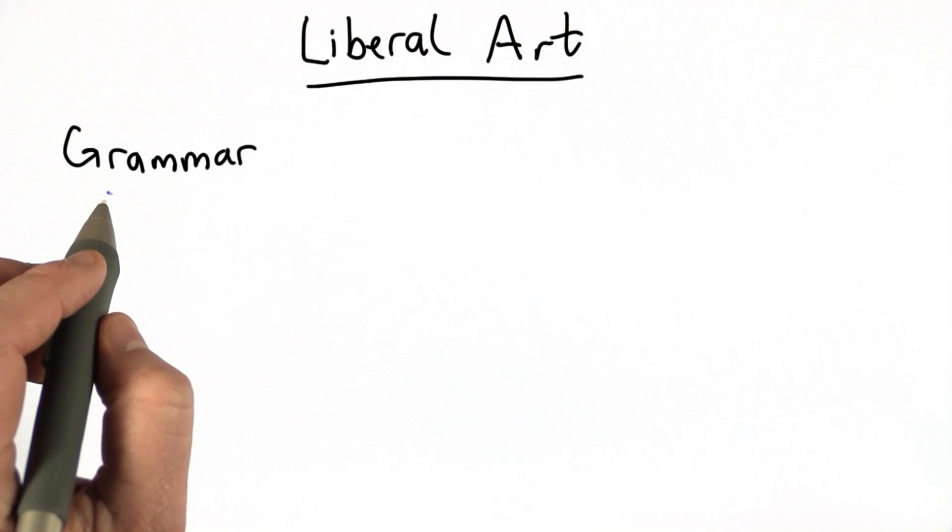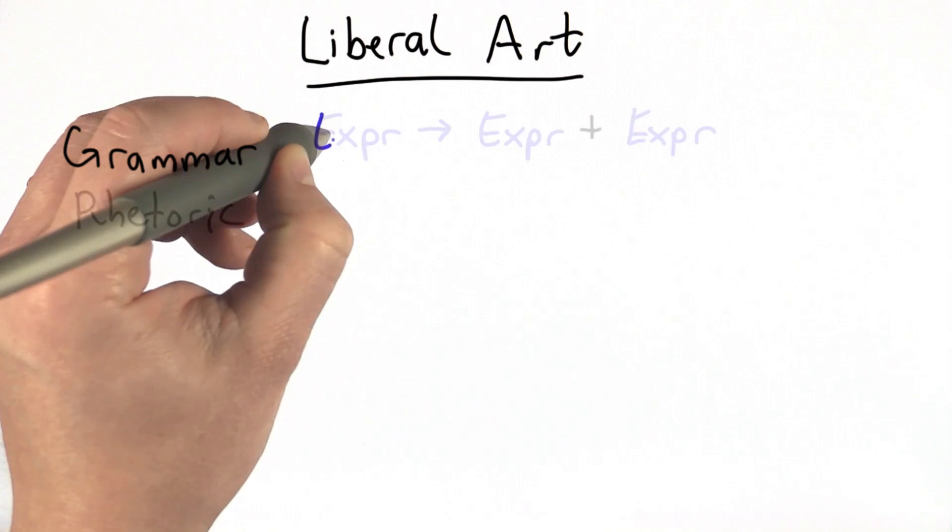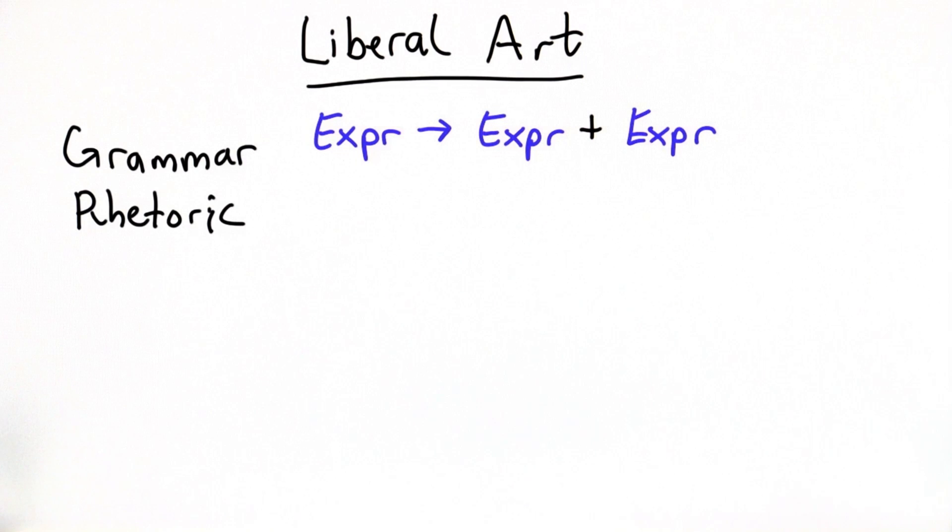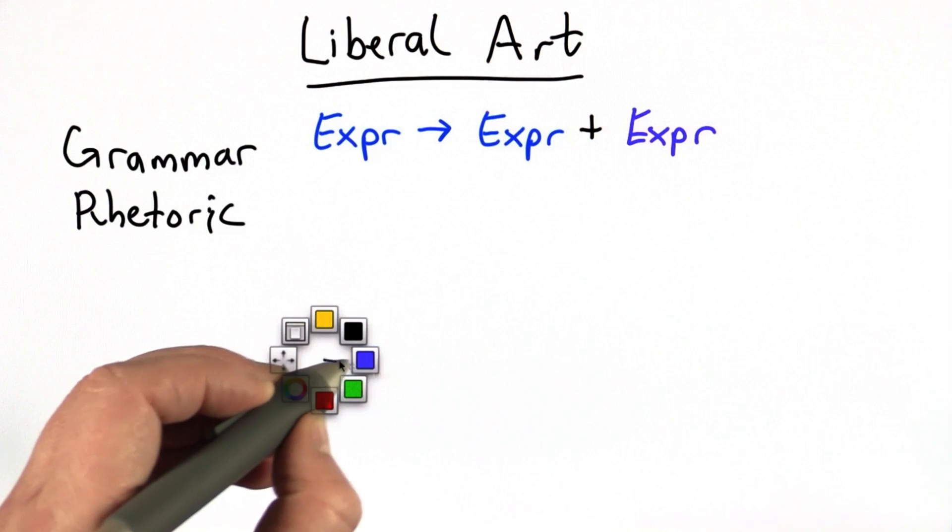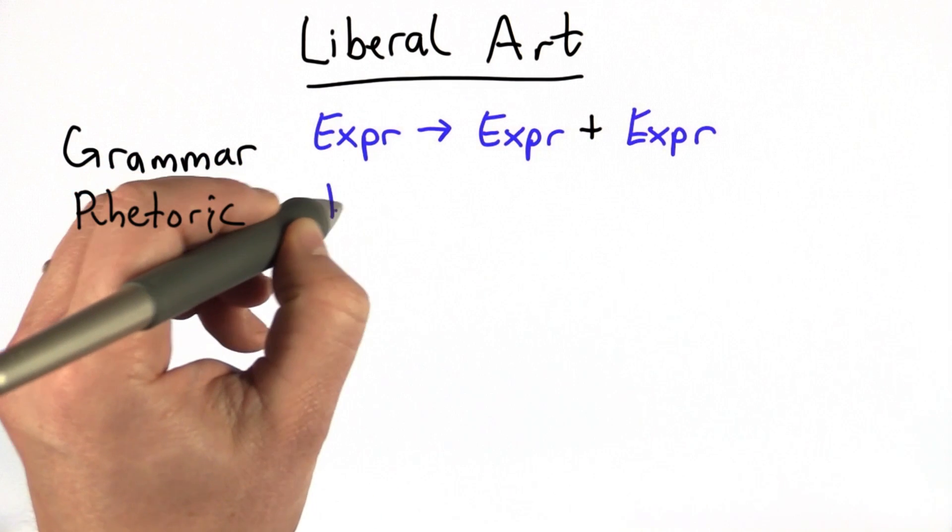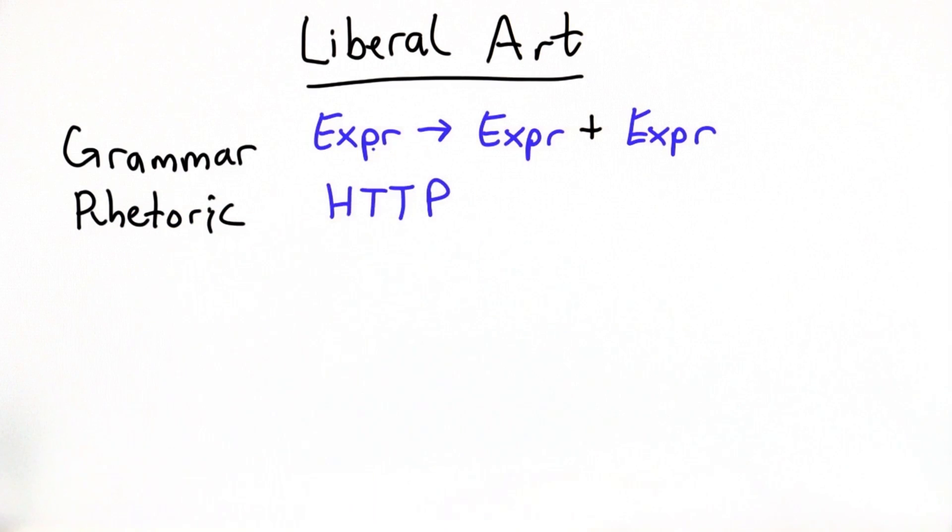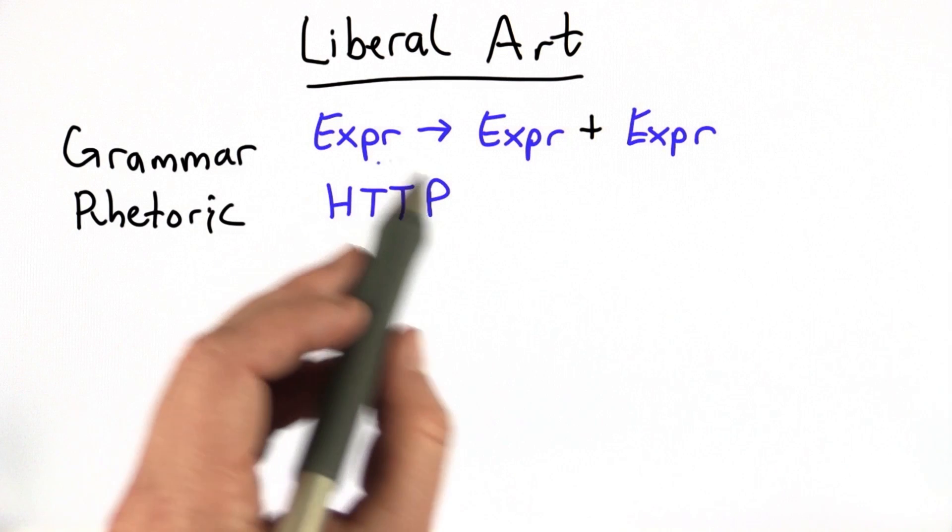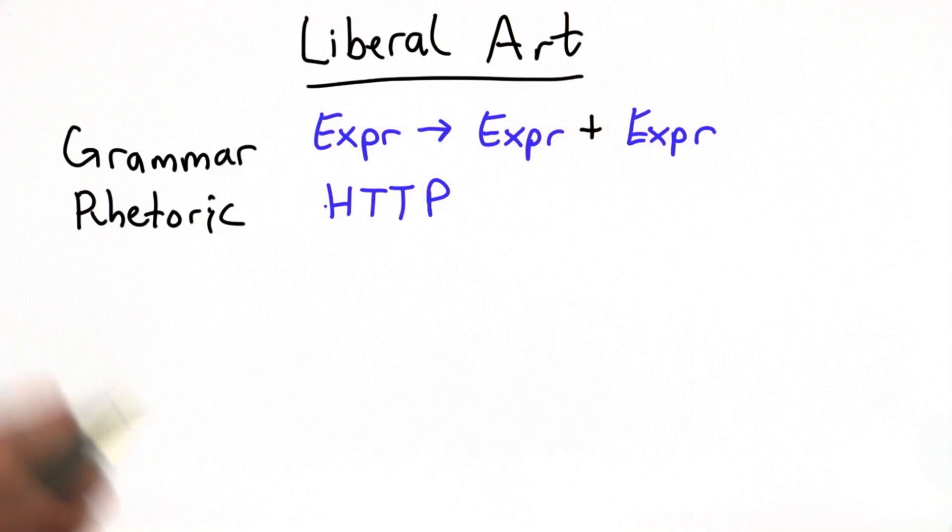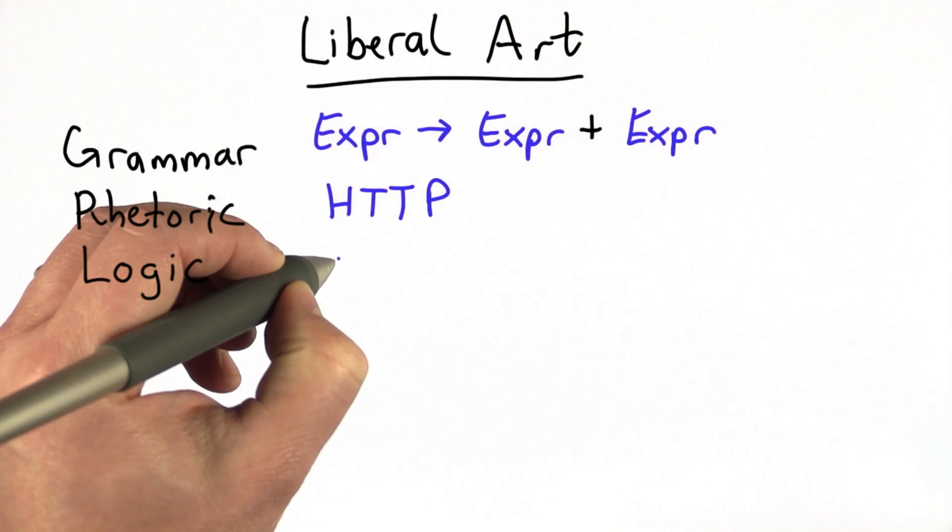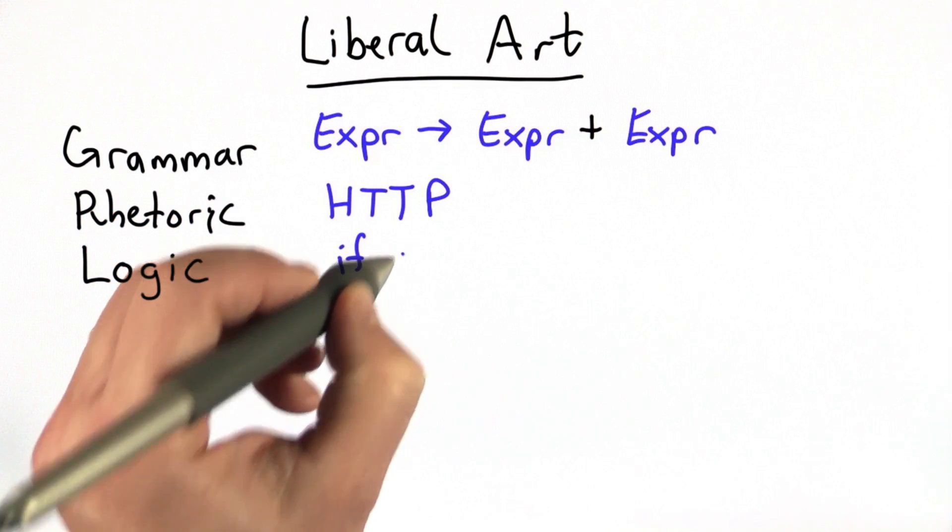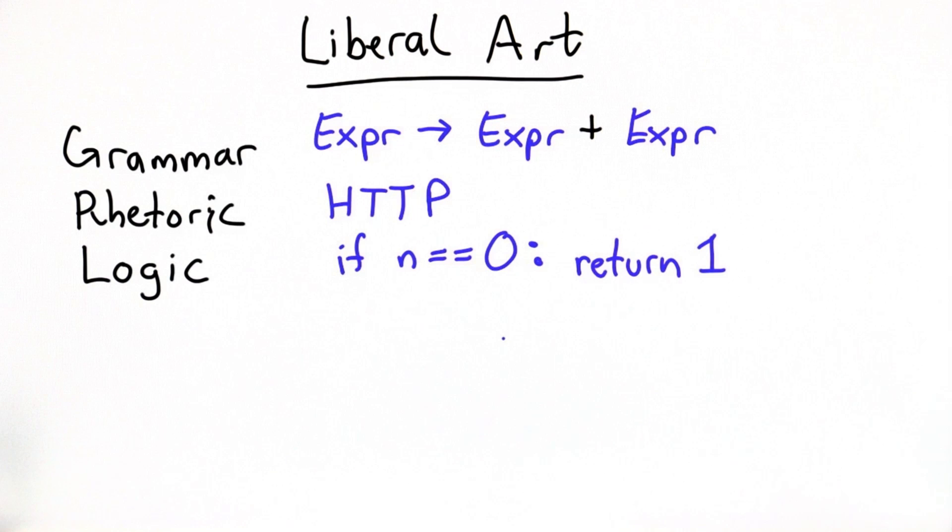So how do each of those relate to computing? Well, we've certainly seen a lot with grammars. We've seen rules like this. Rhetoric is about using language to communicate between people, especially to persuade people. Well, we've actually seen rhetoric a little bit. This is a little less clear, but we've seen that in terms of network protocols. What protocols are are ways of computers communicating with each other and making sure that they can understand each other. So arguably that's a form of rhetoric. Logic is the art of thinking in the medieval view. We've certainly used logic all over the place in this class. All of our decision constructs are logical constructs.